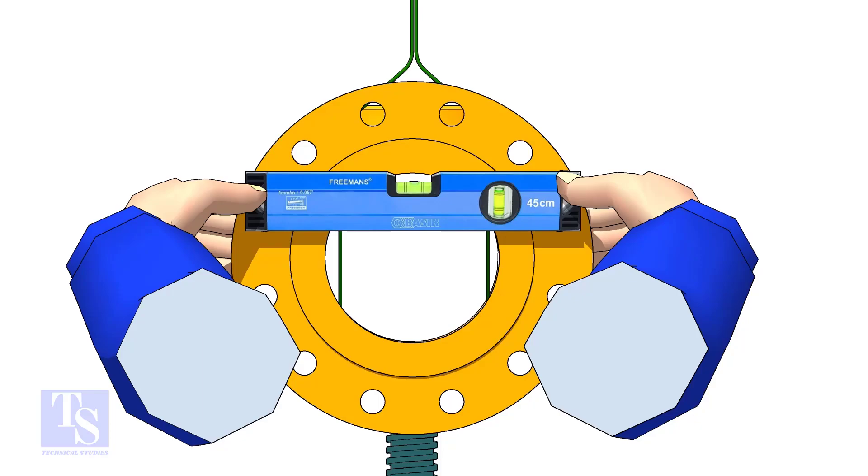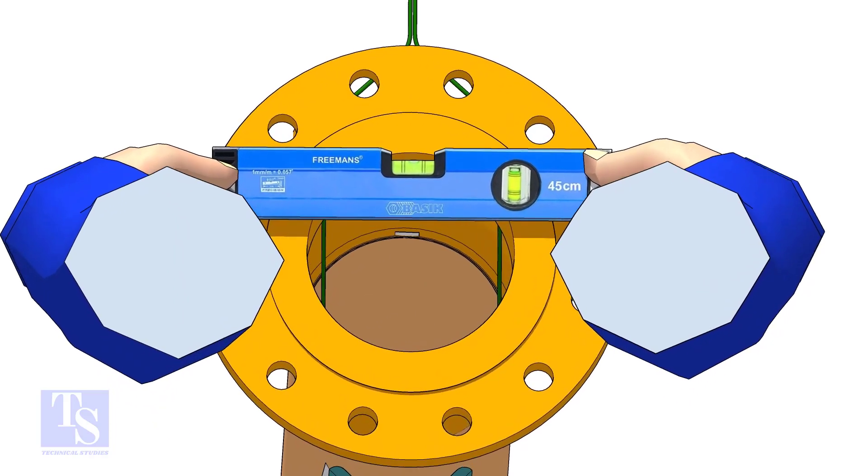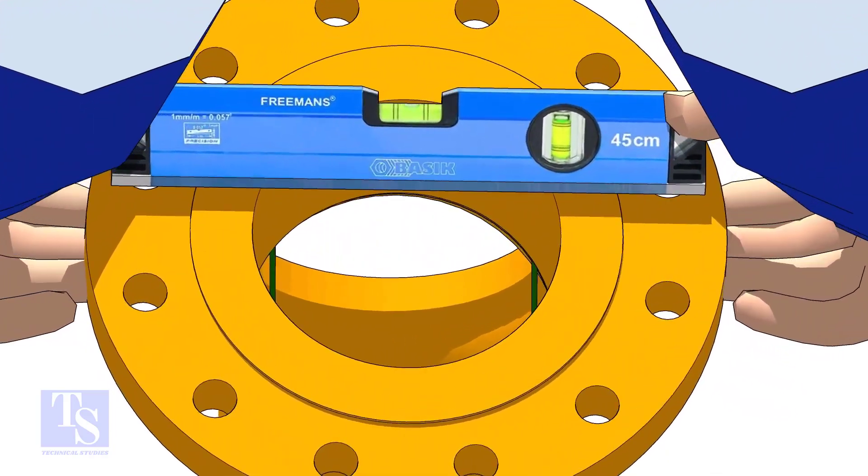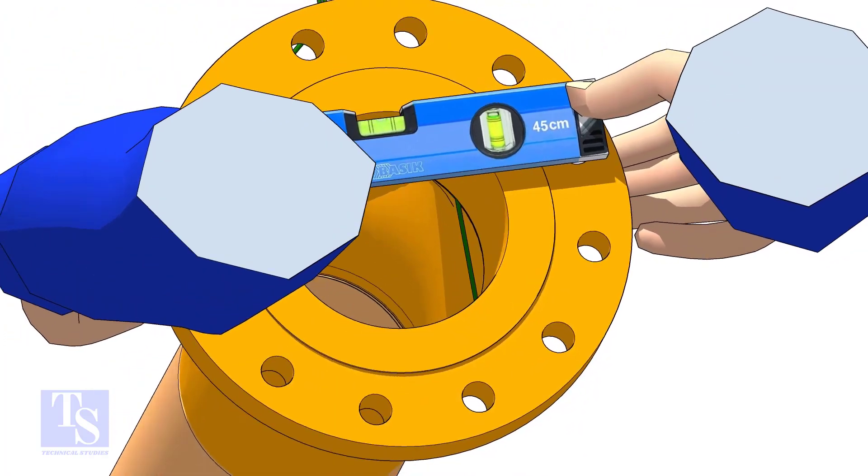Hold the level bottle and the flange together and rotate as required, to maintain the level. Don't miss the internal level of the flange and the pipe.